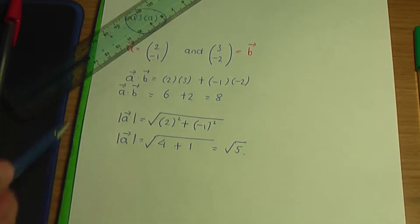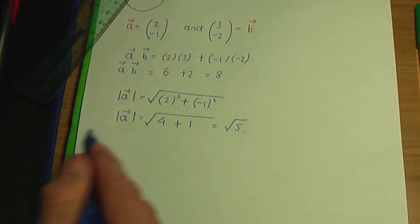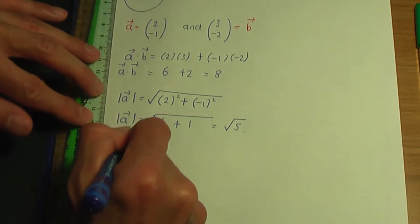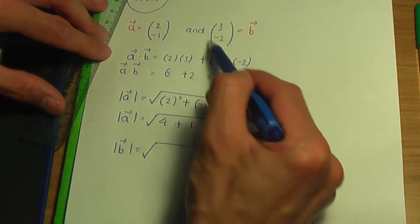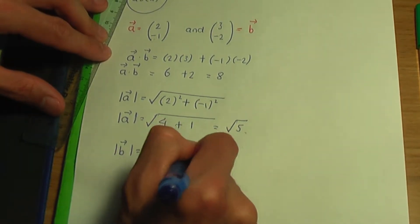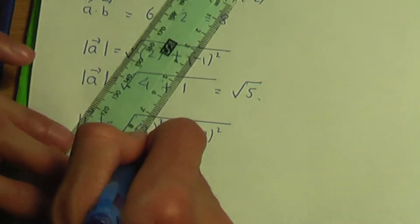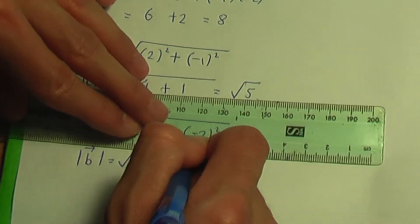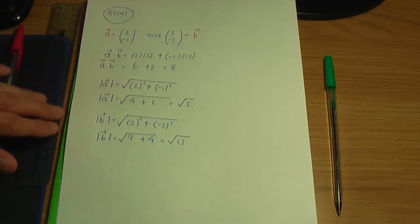If you're unfamiliar with the concepts I'm using, I'll provide links to videos explaining them with additional examples in the description below. Now for the modulus of B: it's the square root of three squared plus minus two squared, which is the square root of nine plus four, giving us root thirteen. That is the modulus or magnitude of vector B.